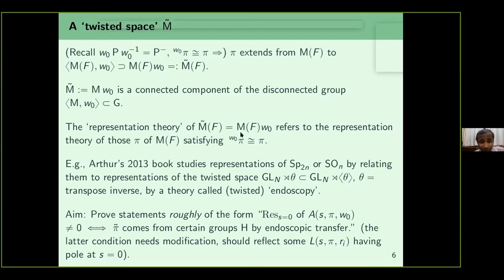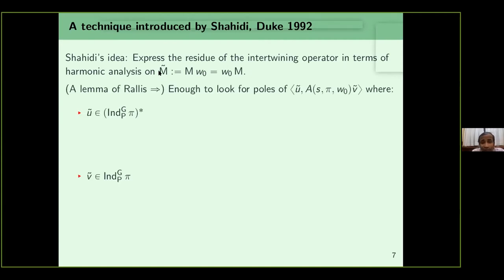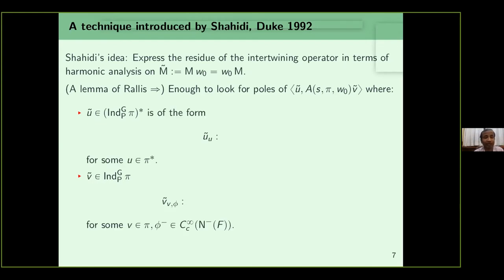π extends from a representation of M of F to a representation of the twisted space M-tilde of F — call that π-tilde. Our aim is to show that the intertwining operator has a residue at s equals zero if and only if π-tilde comes by endoscopic transfer from certain groups H. This is Shahidi's technique introduced in his Duke 1992 paper: start looking at the intertwining operator and try to directly relate it to harmonic analysis on the twisted space M-tilde.